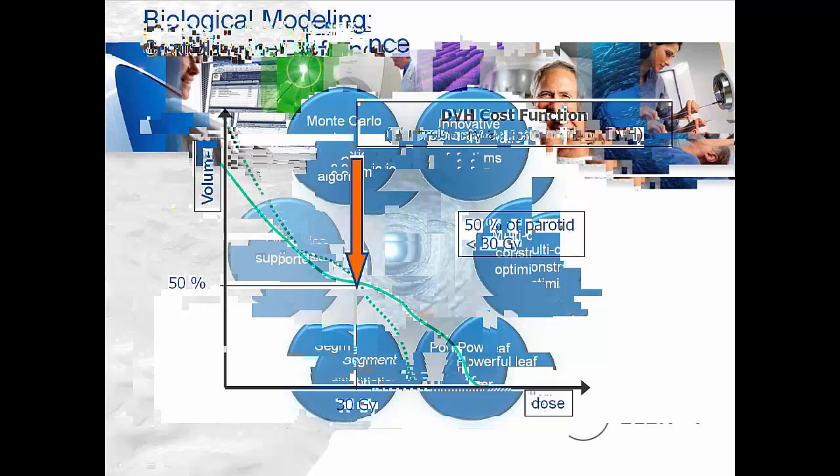Constrained optimization: a lot of systems today use unconstrained optimization, where you put in your targets and organs at risk, set your weighting, and they're kind of fighting amongst themselves. In Monaco, it's constrained optimization—the PTVs come first before we start worrying about the organs at risk. There's a checkbox on the constraint page that lets you use a manual weighting feature. You could calc out a plan unconstrained from the start, or use constrained and let Monaco do it, then go back and push back on structures you need to tweak.